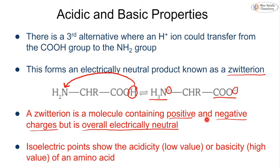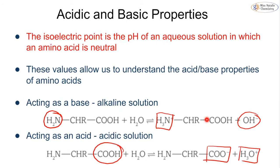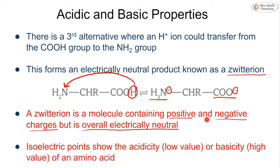These isoelectric point values tell us the acidity or the basicity of an amino acid. If we have a very low isoelectric point value it is more likely to act as an acid. If we have a high isoelectric point it is going to be acting as a base. And if it is actually at the isoelectric point then it is going to exist as a zwitterion and that is when it is electrically neutral.